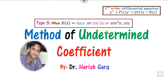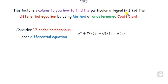Hello students, welcome to the next lecture on the differential equation. Today we will discuss the method of undetermined coefficients, when the right-hand side of the differential equation is of trigonometric form — sine, cosine, sine squared and so on. How can you solve this type of problem?